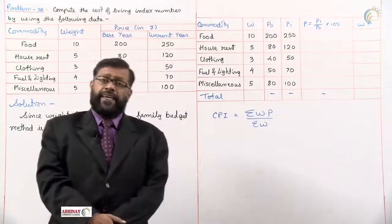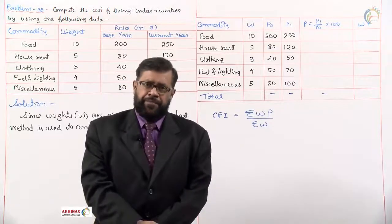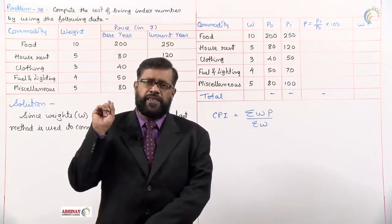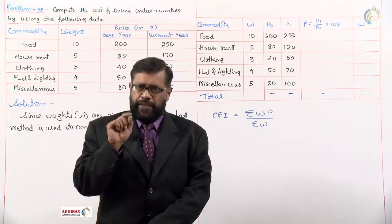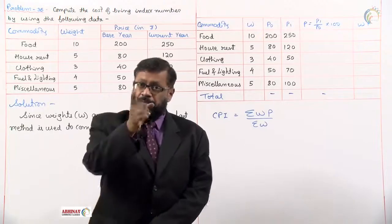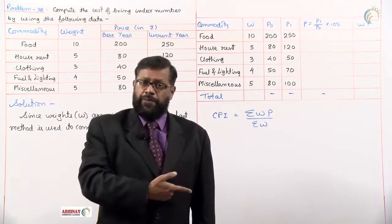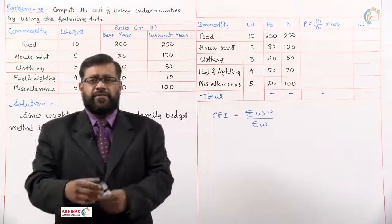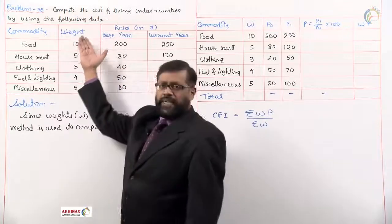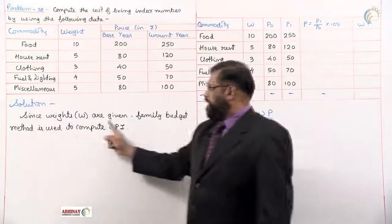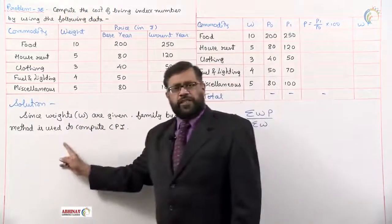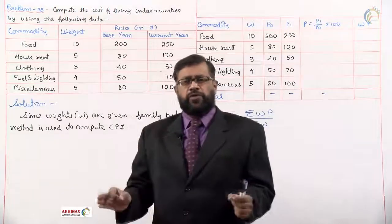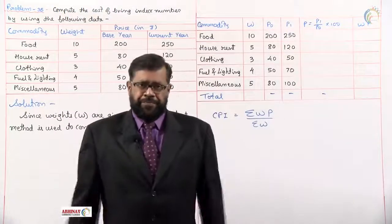In the problem, what is given? See, have they given the base year quantity q naught? Now if base year quantity was given like problem 35, aggregative expenditure method is used. But here weights are given, and when weights are given, since weights are given, family budget method is used to compute your consumer price index number.